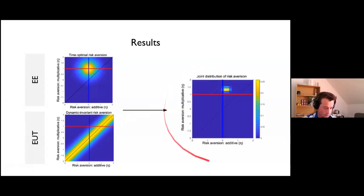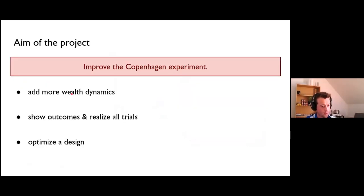This is the expected posterior distribution of risk aversion for both theories. This is the additive day and this is the multiplicative day. EE postulates that it should be zero for additive and one for multiplicative. EUT says that it should be the same for different subjects but different subjects can have different values. The result after collecting the data and fitting the Bayesian model showed that the posterior distribution of risk aversion is located here. It's much closer to the EE, and it was shown using rigorous Bayesian methods that the EE model is more likely.